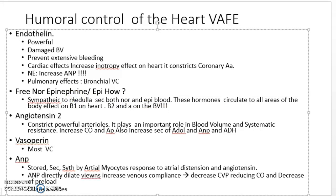The angiotensin system is very important. Due to a decrease in renal perfusion, it causes an increase in ADH, an increase in aldosterone, an increase in vasoconstriction, an increase in total peripheral resistance, increased sodium transporters in the kidney, increased sodium absorption, and increased ADH release.